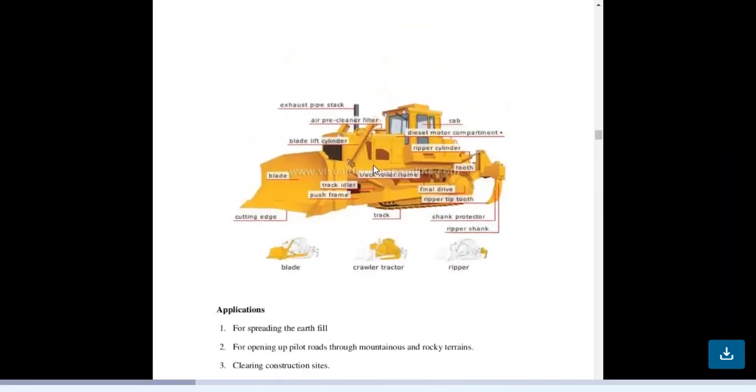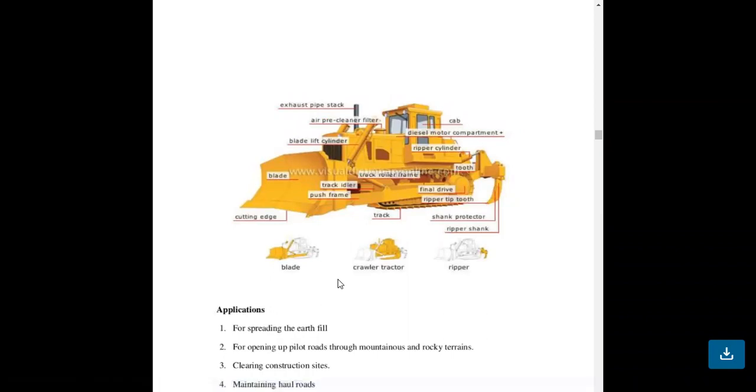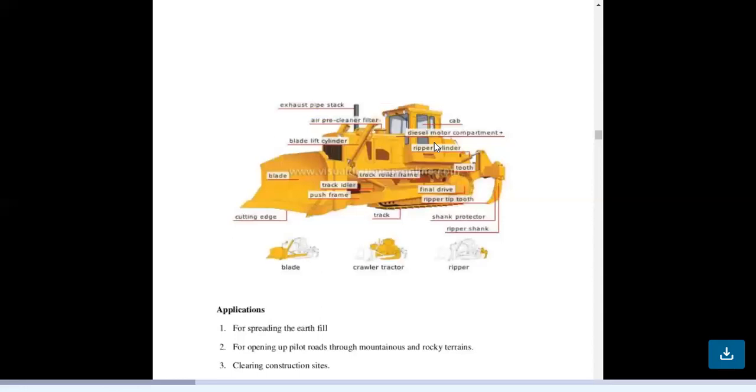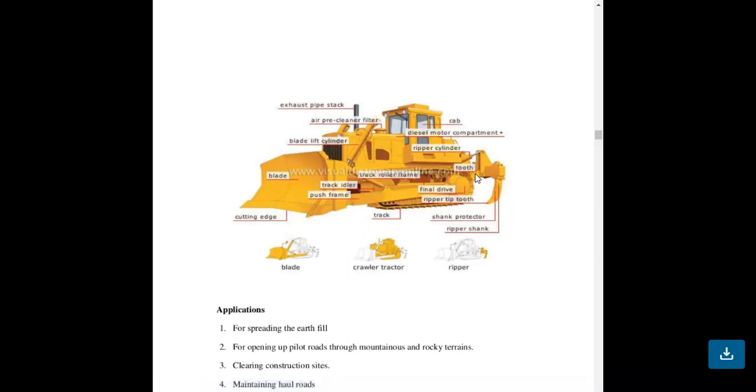We can show a picture of bulldozer in which we can find some elements of bulldozer: blade also known as bucket, cab for monitoring and application purpose, exhaust pipe, air plane filter, ripper, cylinder, tooth for moving the earth also to loosen the earth element to proper excavation.